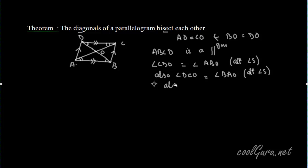And also CD equals AB, since opposite sides of a parallelogram are equal. Now considering triangles CDO and ABO, in these two triangles.